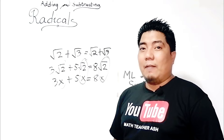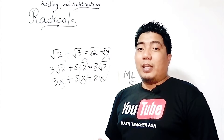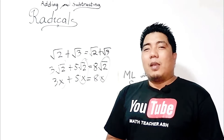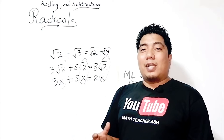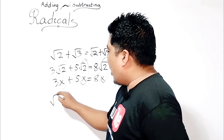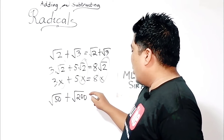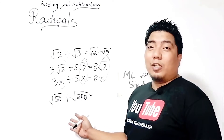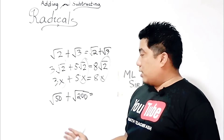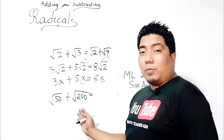The same concept is applied in subtracting radicals — you just apply what you have learned in subtracting polynomials, but with a radical expression. However, there are times that this kind of problem will become challenging. For example, if you have square root of 50 plus square root of 200, what is the answer?